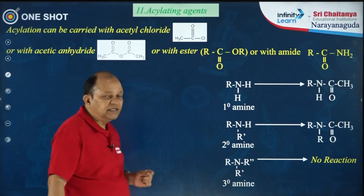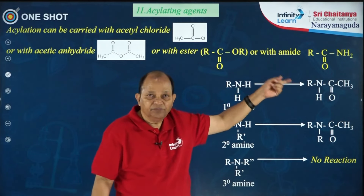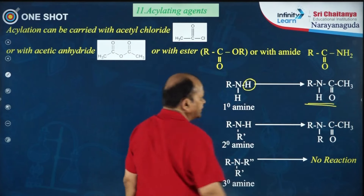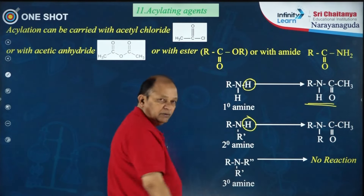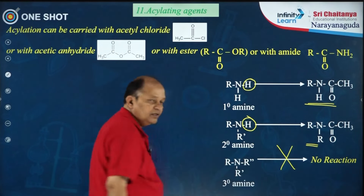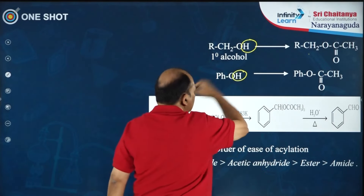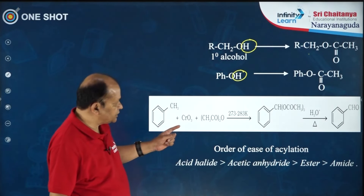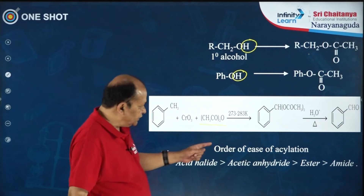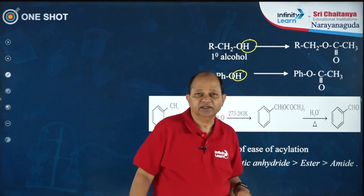These are the acylating agents: you can use acetyl chloride, acetic anhydride, ester, or an amide for acylation reactions. With a primary amine, the N–H hydrogen is substituted to give the acylated product. With secondary amine, the N–H hydrogen is substituted to give the product. In tertiary amine there are no hydrogens, so there is no reaction. Primary and phenolic alcohols also give acylation products. The order of ease of acylation: acyl halides are the best acylating agents, followed by acetic anhydride, then esters, and least reactive are amides.